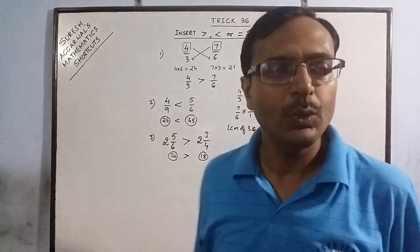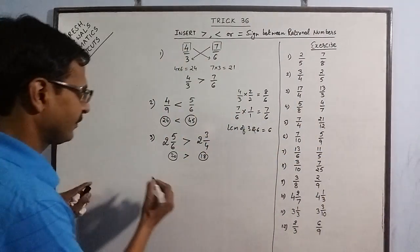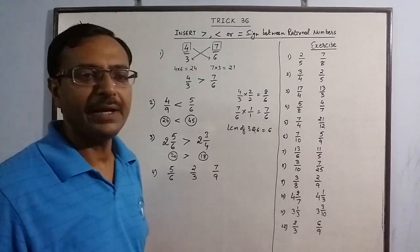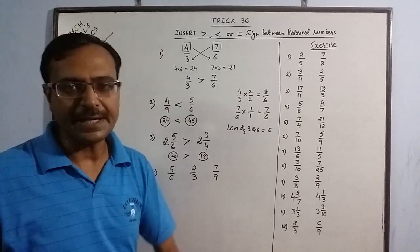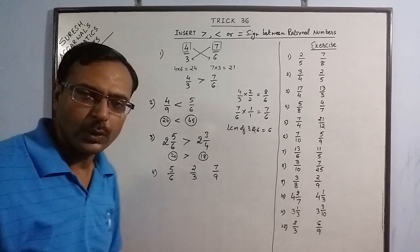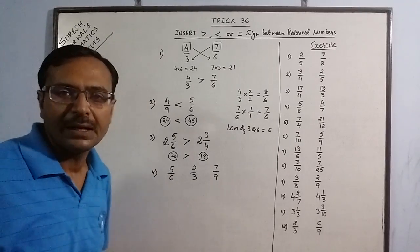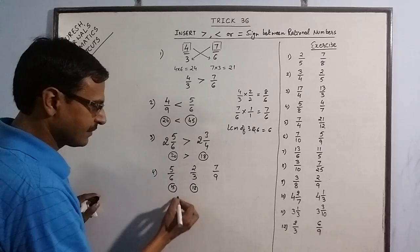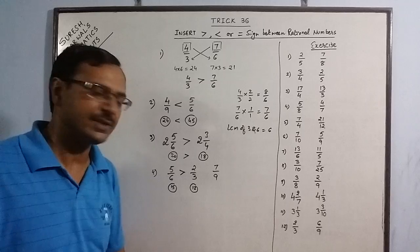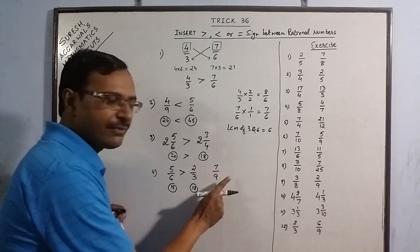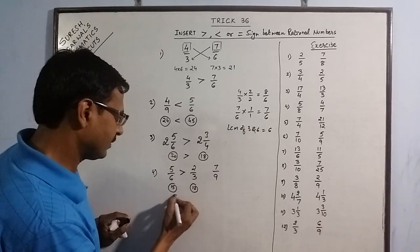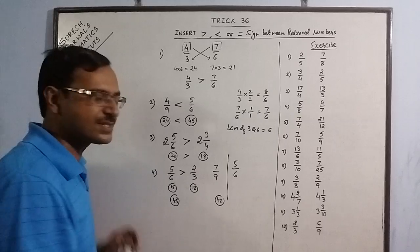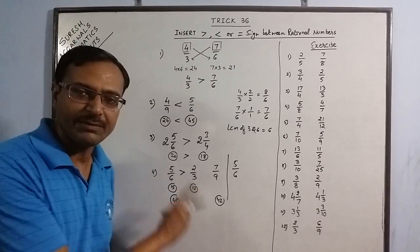Similarly, when we have to find the greatest among three rational numbers — say 5/6, 2/3, and 7/9 — we compare the first two: 5 times 3 is 15 and 6 times 2 is 12, so 5/6 is greater than 2/3. Then compare 5/6 and 7/9: 9 times 5 is 45 and 7 times 6 is 42, so 5/6 is also greater than 7/9. Therefore 5/6 is the greatest of the three.